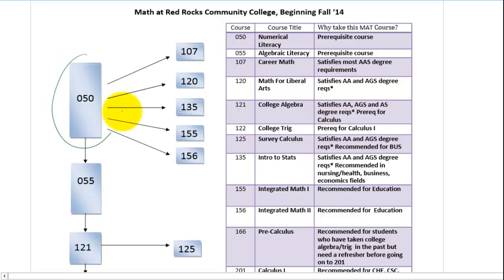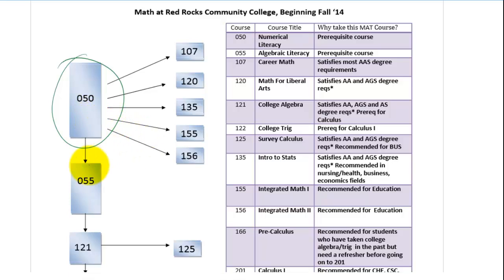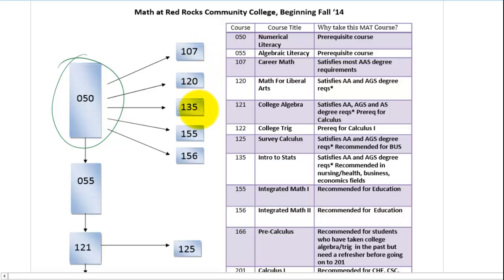But let's assume you take the math Acuplacer and you place into Math 050. That'll be your first math class, but the question is, where are you heading next? That decision needs to be made pretty much right away. A lot of people that are getting an Associates of Applied Science will be taking Math 107. A lot of people that are getting an Associates of Arts degree will be taking Math 120 or 135, maybe even 155 and 156. Those students that are getting an Associates of Science degree will want to take at least Math 121. So the moral of the story is, you want to check your degree or certificate to see what your last math class is going to be.